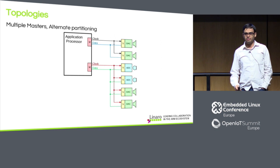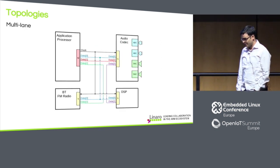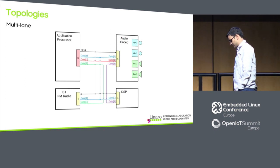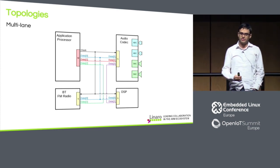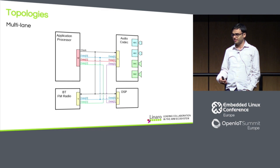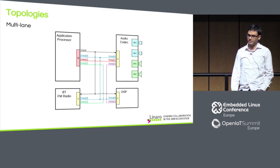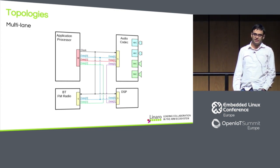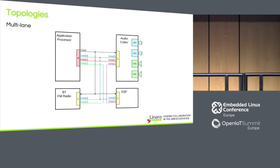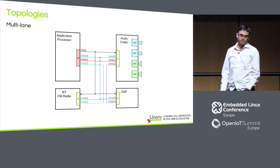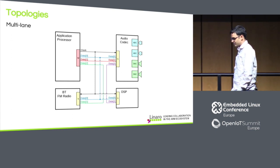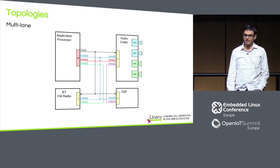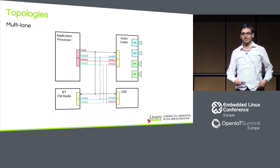We can make topologies more complicated with a multi-lane system. From a topology point of view, you have a single master able to drive a quite complex mobile audio topology — a codec connected, a modem, possibly a DSP, a BT/FM chip. Notably, not all data lanes are required to go to the master, so two slaves can directly communicate without the master being involved.